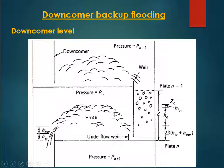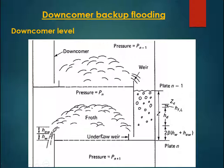The pressure at the downcomer inlet is Pn minus 1, which is smaller compared to the pressure at the point where liquid must flow. Therefore, the liquid level inside the downcomer must be sufficient to develop enough pressure so that on a horizontal level, liquid can flow from one point to another. If tray pressure drop increases, the liquid head required inside the downcomer also increases.